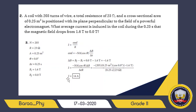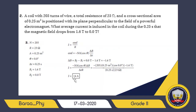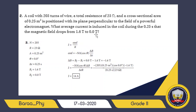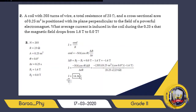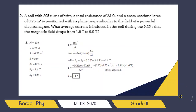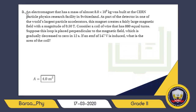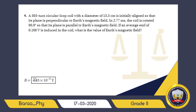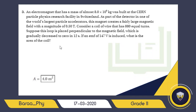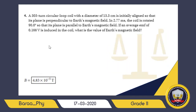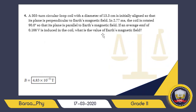Dividing EMF by R gives I equal to 14 amperes. It is positive because the magnetic field decreased, which means the induced current increases in the opposing direction. For homework, you have questions three and four — please check your answers. In question three you are asked to find the magnitude of the magnetic field.